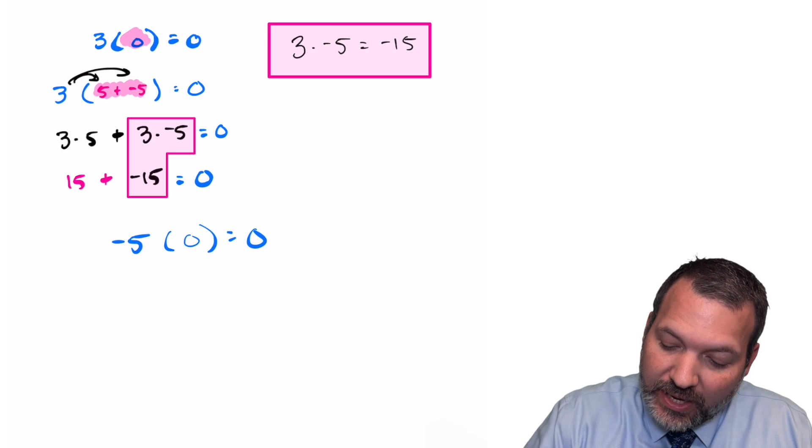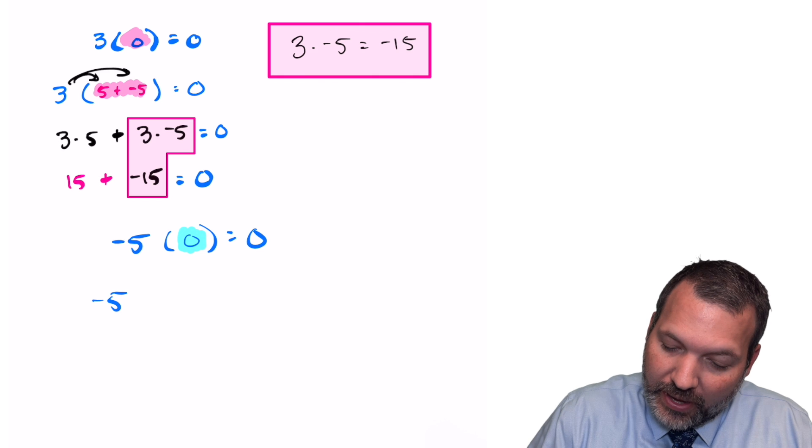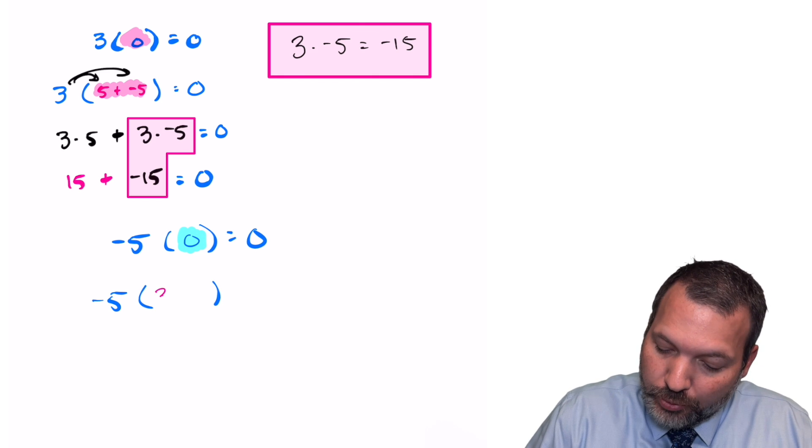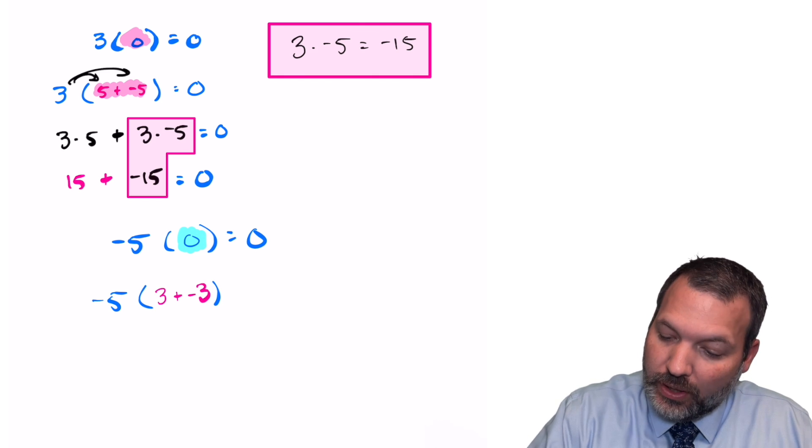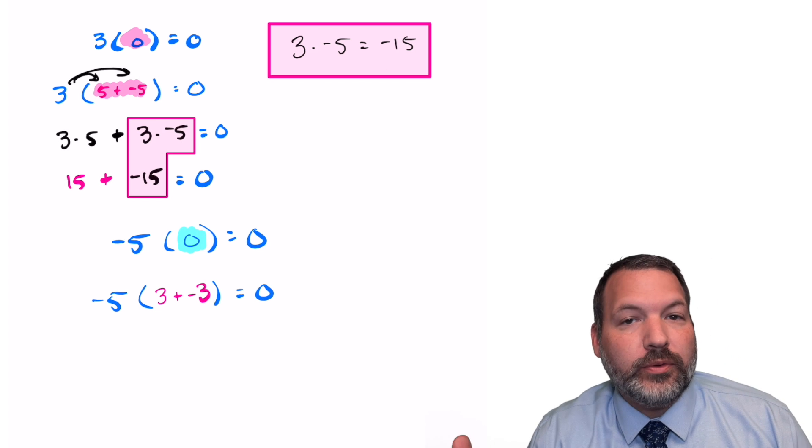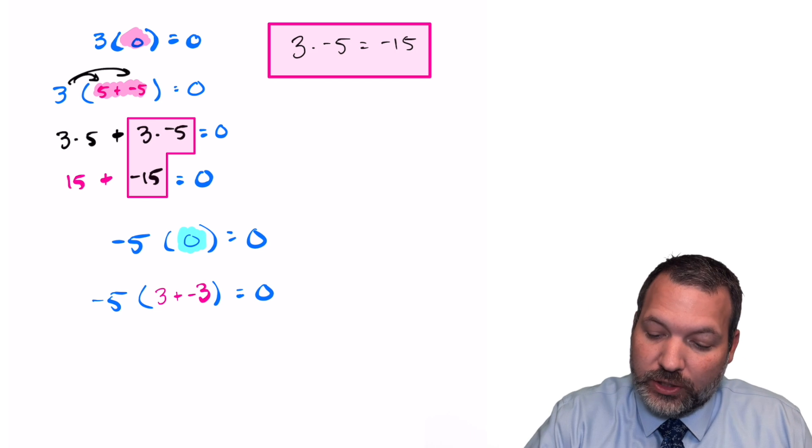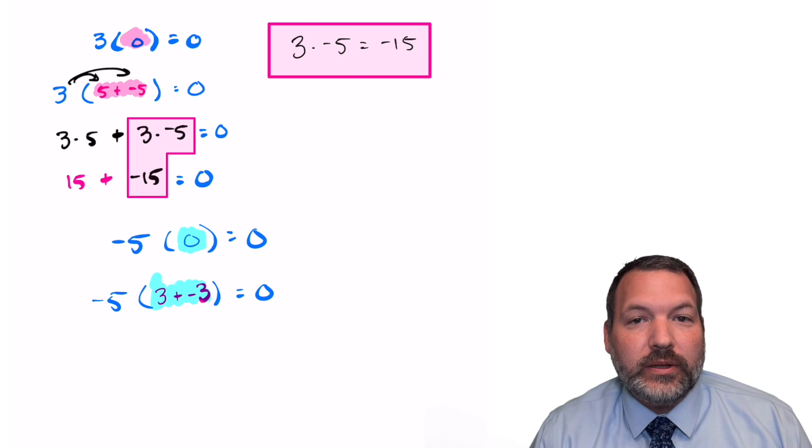But again, let's go ahead and take the inside of those parentheses, that zero, and let's rewrite that. This is now going to be negative five times three plus negative three. As long as you agree three plus negative three is zero, then you can see we haven't really changed anything, and so everything still equals zero.